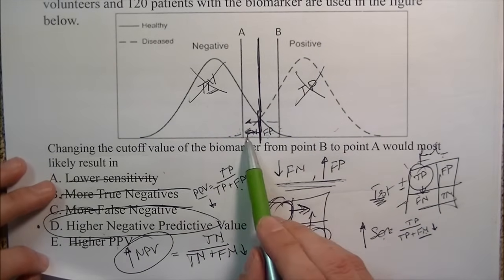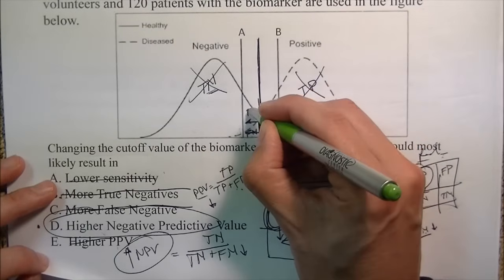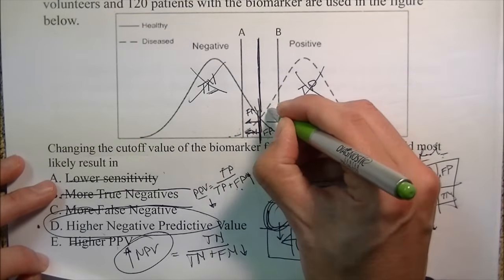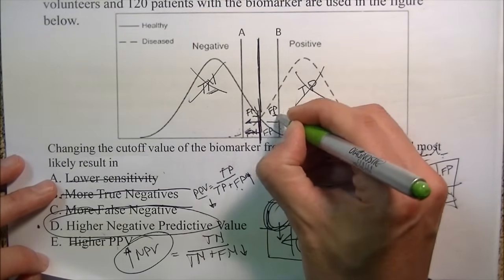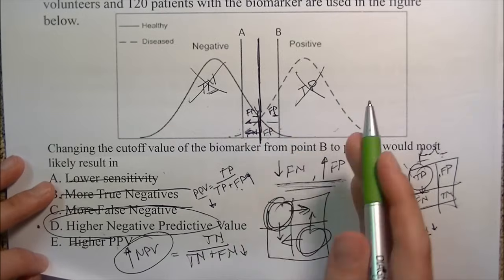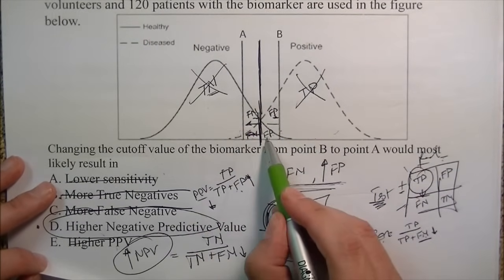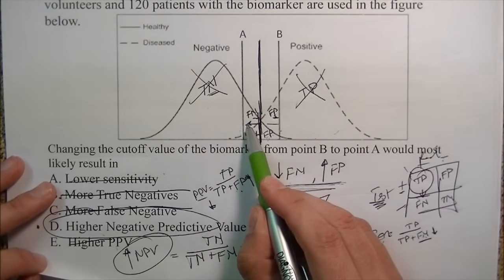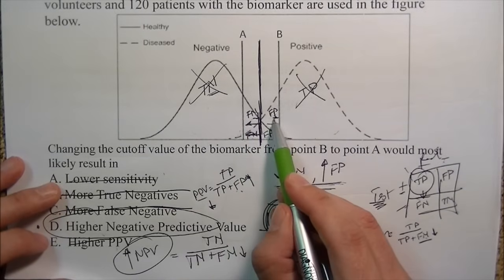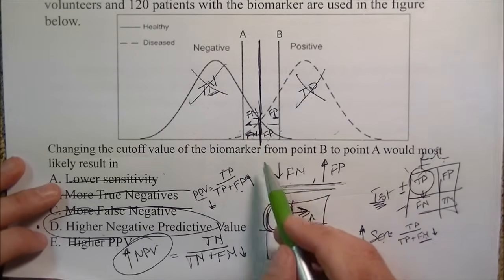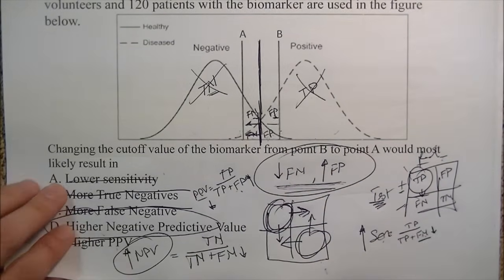All you care about is the middle. Label them correctly — everybody keeps their last name. You're either sliding the cutoff to the left or to the right. If you smash the left, the right goes up; if you smash the right, the left goes up. That's all you need to know.